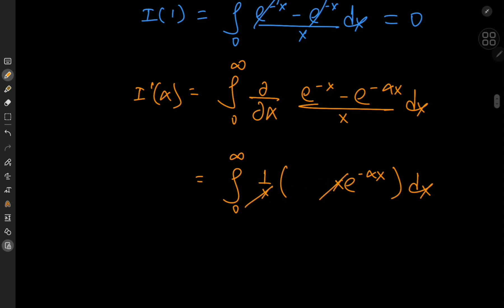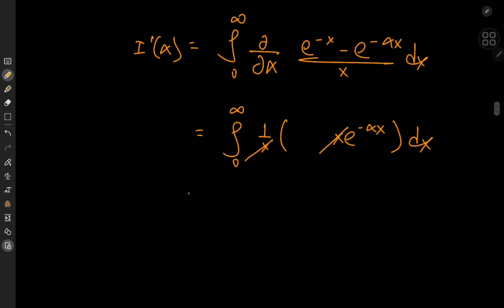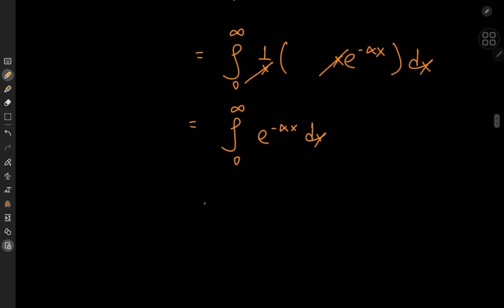So the x terms just cancel out, and we're left with the integral from 0 to infinity of e to the negative alpha x dx, which is of course pretty easy to evaluate. We have e to the negative alpha x over alpha, with limits 0 and infinity.